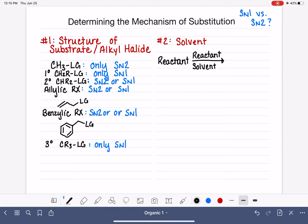So how can we use solvent to predict what type of mechanism a substitution reaction will take? There are two different types of solvents that we see in substitution reactions: polar protic and polar aprotic.